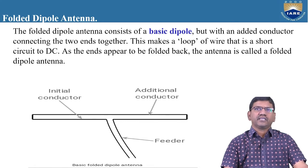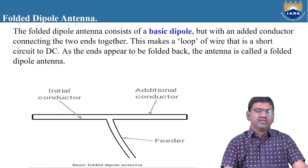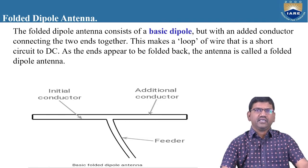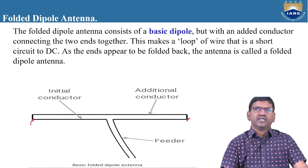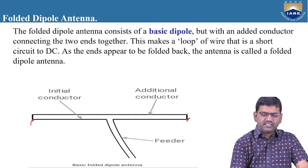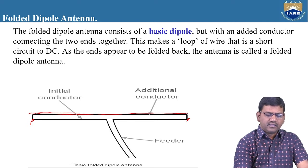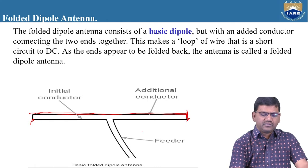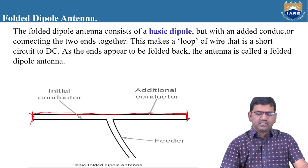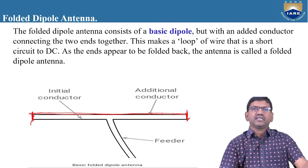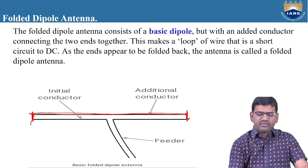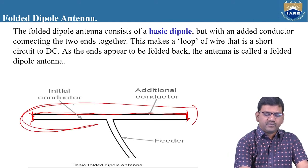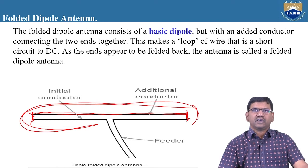In the Yagi-Uda antenna, we consider only the folded dipole antenna as the driven element. The folded dipole consists of a basic dipole with an additional conductor placed in parallel. These two ends are connected together, and if we connect the two ends of the half-wave dipole with another conductor, this will form a loop — a loop of wire that is short circuit to DC.